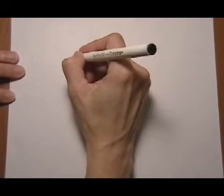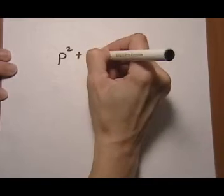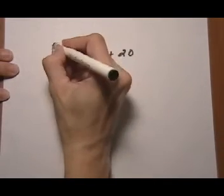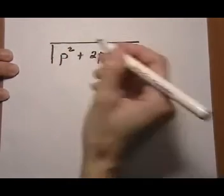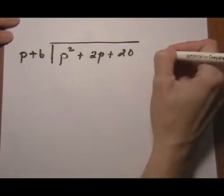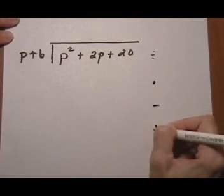So let's see. Let's take the problem. P squared plus 2p plus 20. All being divided by p plus 6. And we'll divide, multiply, subtract, bring down.